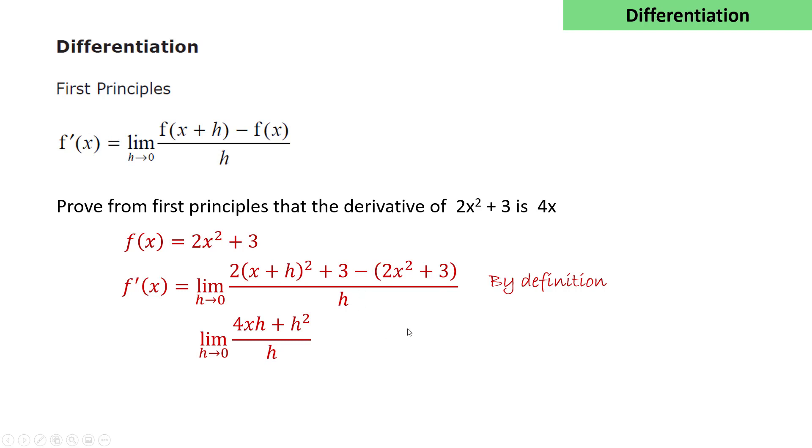And we simplify the expression to give (4xh + h²)/h. So this equals the limit as h tends to 0 of 4x + h, and clearly as h tends to 0, this will tend to 4x as required.